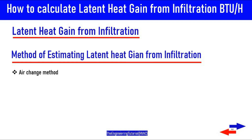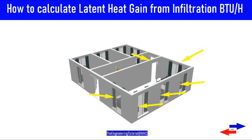In a typical building, air leaks into or out of a space through doors, windows, and small cracks in the building envelope. Air leaking into a space is called infiltration. In the cooling season, when air leaks into a conditioned space from outdoors, it contributes to both the sensible and latent heat gain because the outdoor air is typically warmer and more humid than the indoor air.